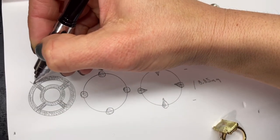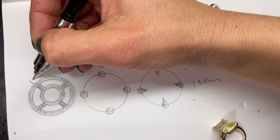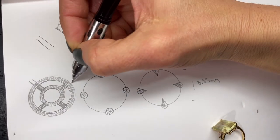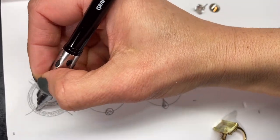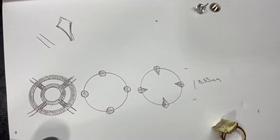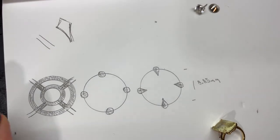So these prongs are going to extend beyond this in order to hold our stone on, and we will talk about how long they need to be as well. So more or less, this is the underneath of a prong setting.